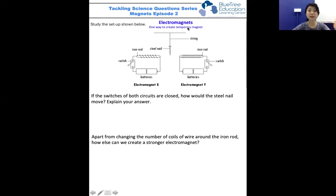If we use electricity, we create temporary magnets called electromagnets. This is a setup showing two electromagnets. The question asks: if the switches are closed forming a closed circuit, how would the steel nail move?